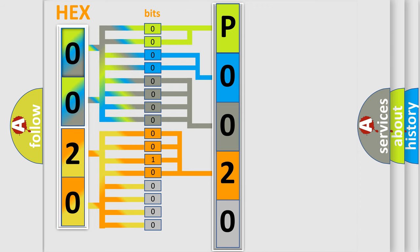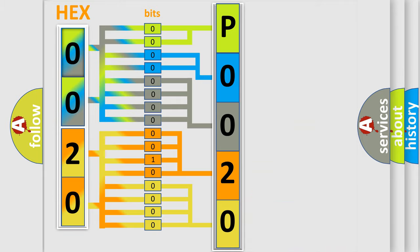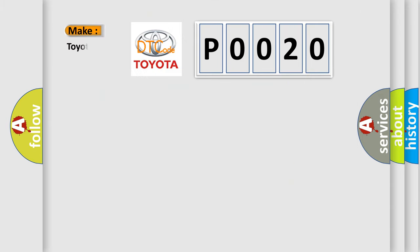A single byte conceals 256 possible combinations. We now know in what way the diagnostic tool translates the received information into a more comprehensible format. The number itself does not make sense to us if we cannot assign information about what it actually expresses. So, what does the diagnostic trouble code P0020 interpret specifically for Toyota car manufacturers?